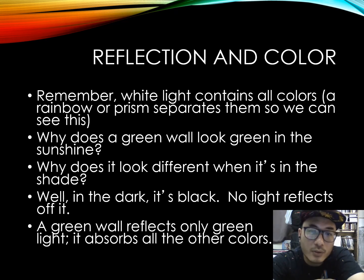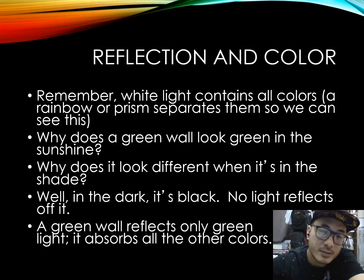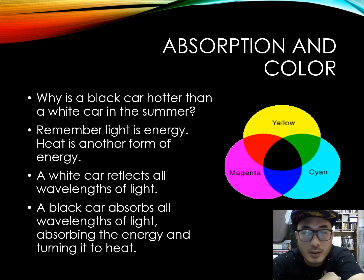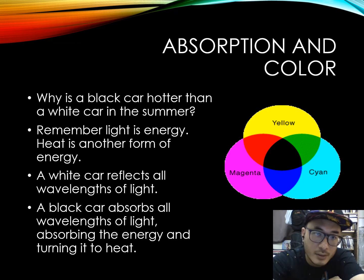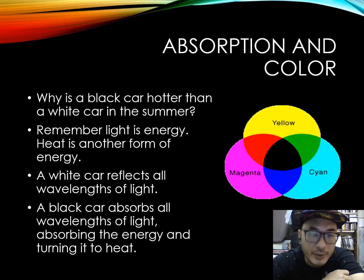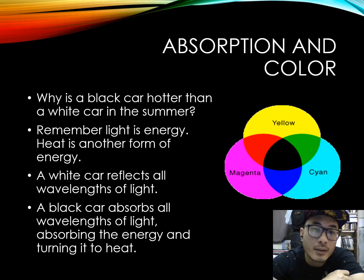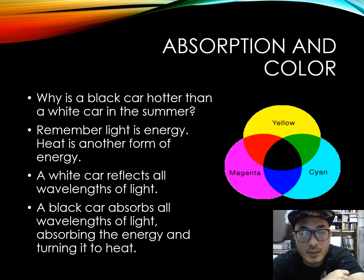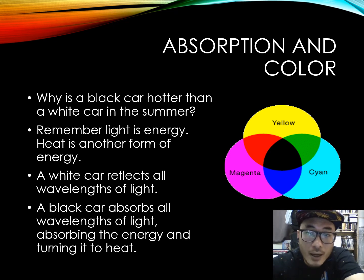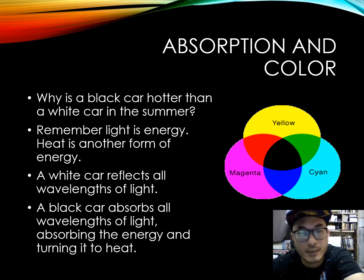A green wall reflects only green light and absorbs all other colours. This is the example of absorption and colour. A black car will be hotter than a white car in the summer. Remember, light is energy, and heat is another form of energy. A white car reflects all wavelengths of light, but a black car absorbs all wavelengths of light and converts that energy into heat. That is why a black car is hotter than a white car — not only in summer.